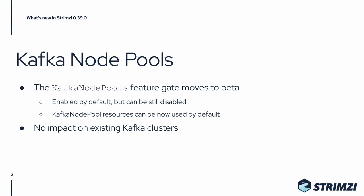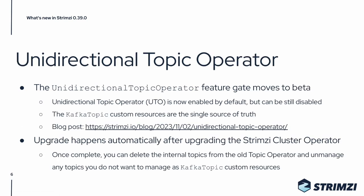The third feature gate changing its level in this release is the Unidirectional Topic Operator feature gate. It moves to beta, so it's also enabled by default but can still be disabled. If you are not yet familiar with the Unidirectional Topic Operator and want to learn more, we recommend you check out the blog about it on our website.